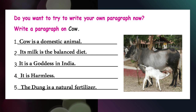Cow is... its milk is... it is... it is... the dung is. Cow is a domestic animal. Its milk is the balanced diet. It is a goddess in India. It is harmless. The dung is a natural fertilizer.